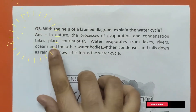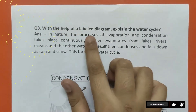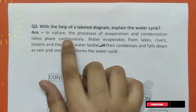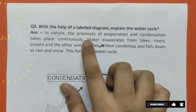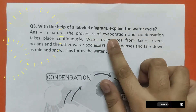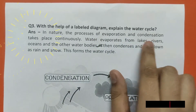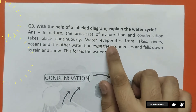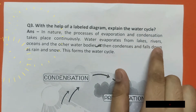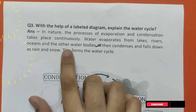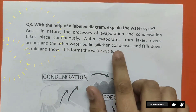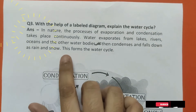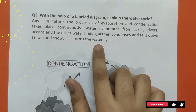Question number 3. With the help of a labelled diagram, explain the water cycle. Answer: In nature, the processes of evaporation and condensation take place continuously. Water evaporates from lakes, rivers, oceans and other water bodies, then condenses and falls down as rain and snow. This forms the water cycle.